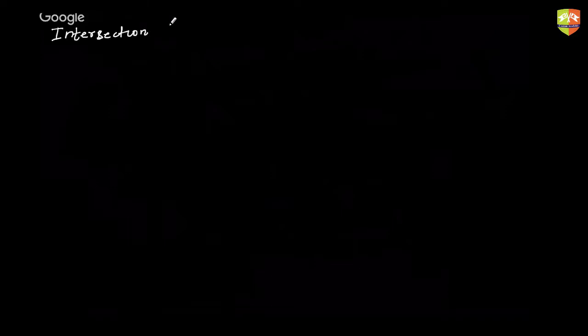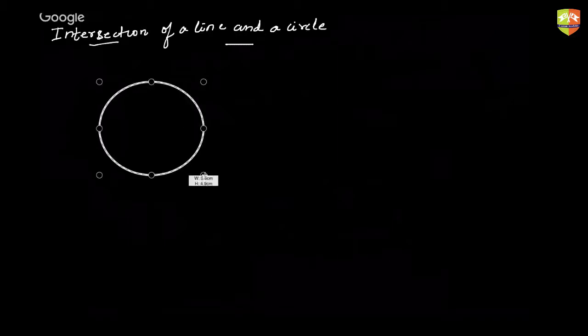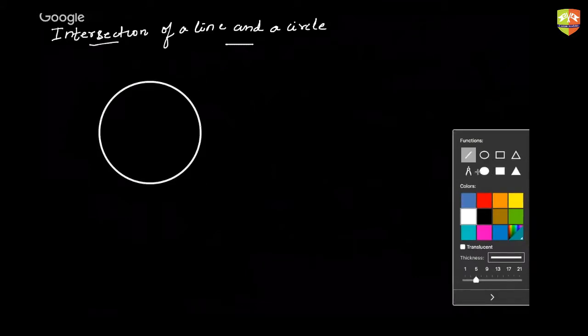Next is the concept of intersection — specifically, the intersection of a line and a circle. Let's say we have a circle and a line. This line and this circle will interact in three ways.